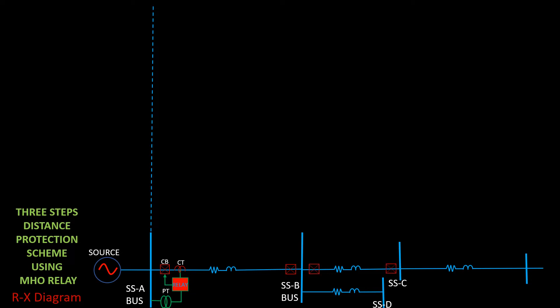Line under consideration, adjoining next longest line, adjoining next longest line, second adjoining next shortest line, bus at substation E.